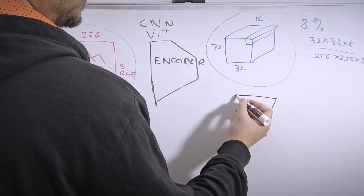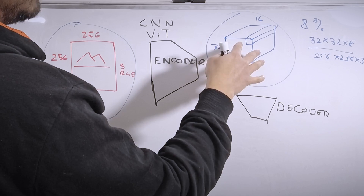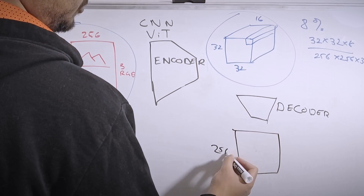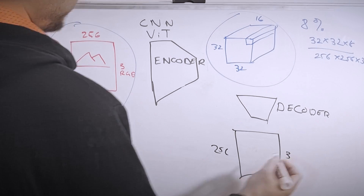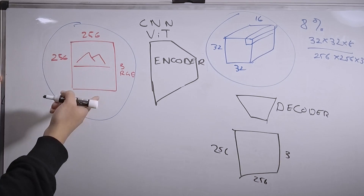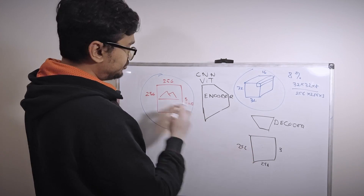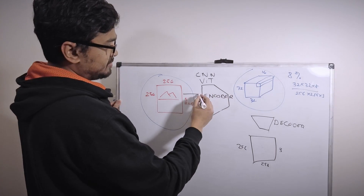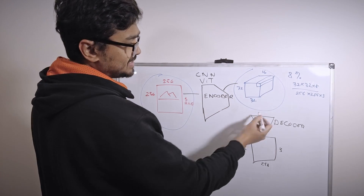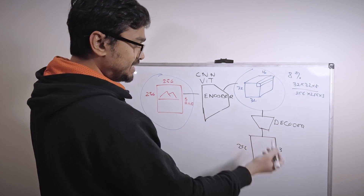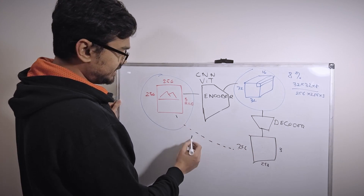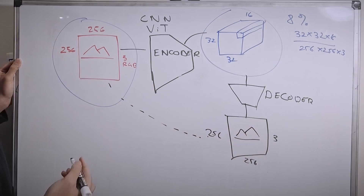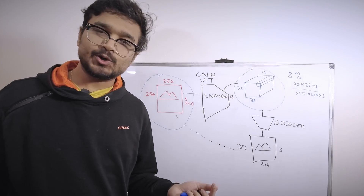Another neural network called the decoder takes this latent space and outputs a new image of the same shape as the original, 256 by 256 by 3. The network is trained to reconstruct the original image from the latent space. The loss is the reconstruction loss between the output image and the original image — that's what the autoencoder does.